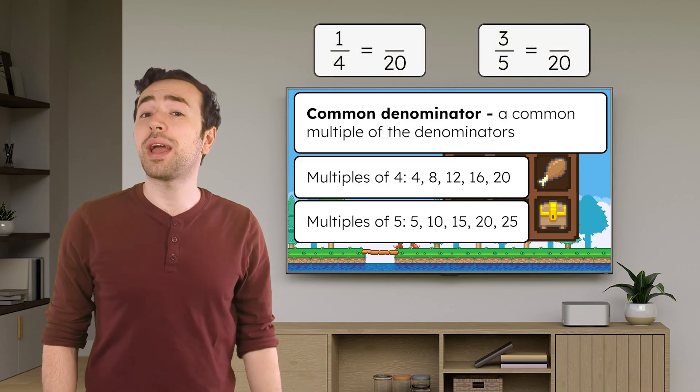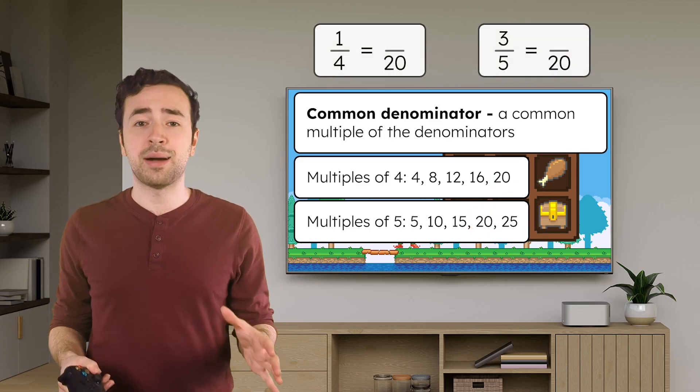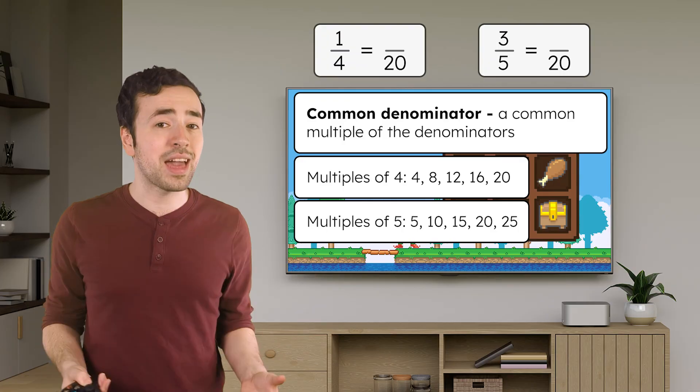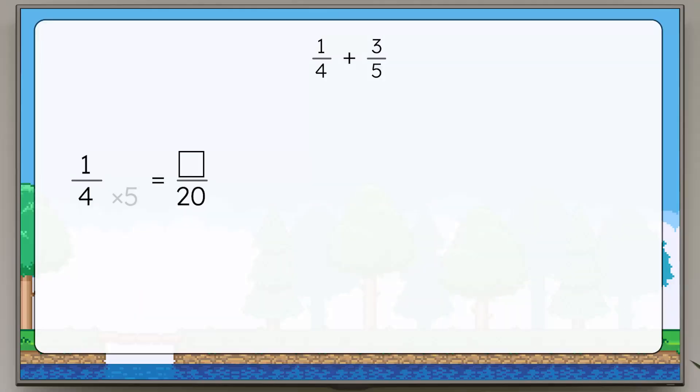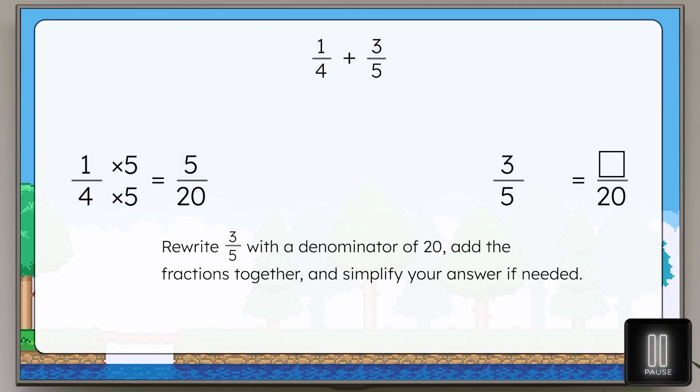That means we can rewrite each fraction with a common denominator of twenty, and then add them together. Four times five equals twenty. To find an equivalent fraction, we also need to multiply the numerator by five. So one-fourth equals five-twentieths. But that's only part of the problem. Pause here to rewrite three-fifths with a denominator of twenty, add the fractions together, and simplify your answer if needed.